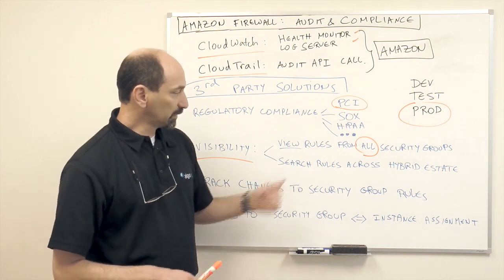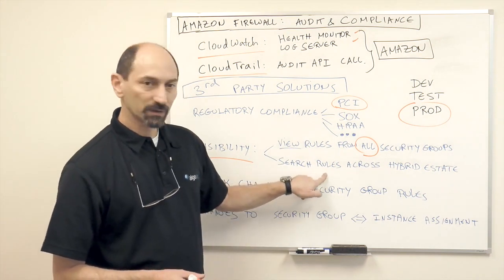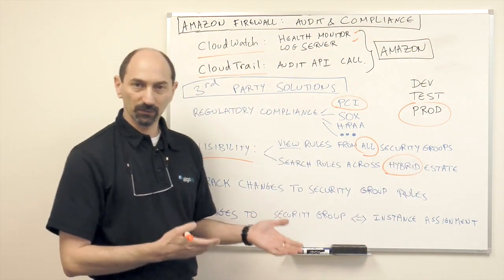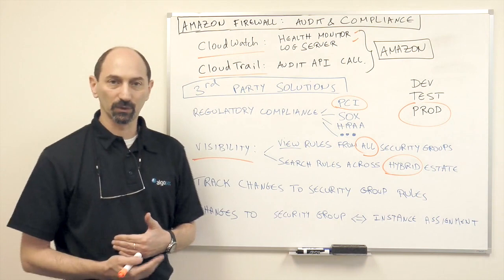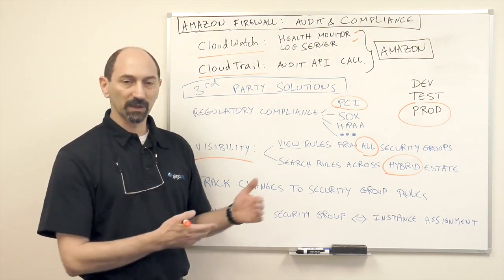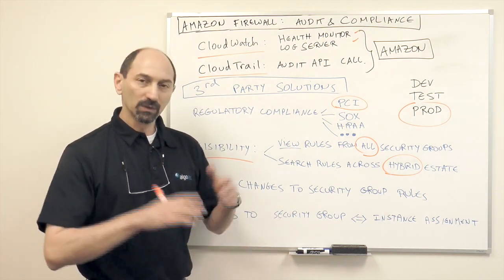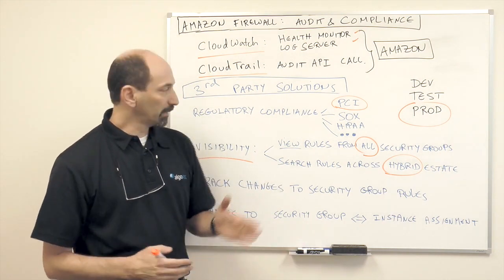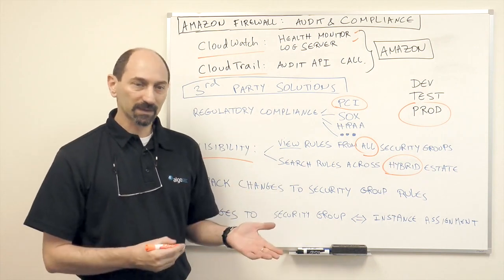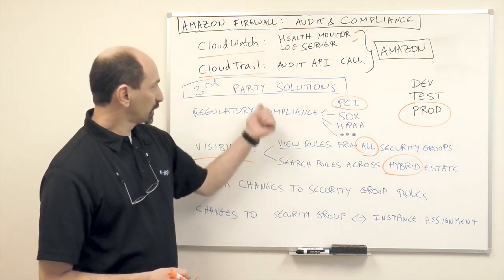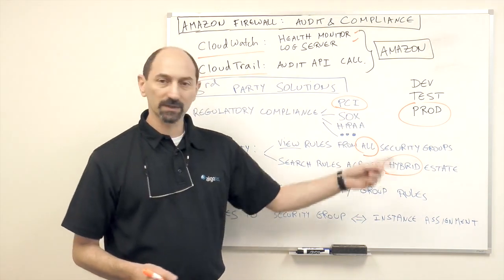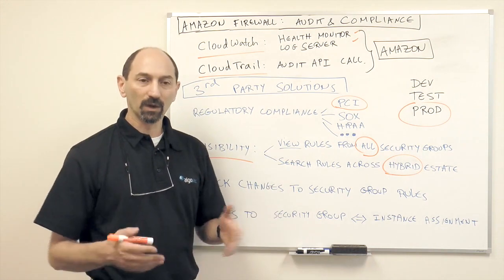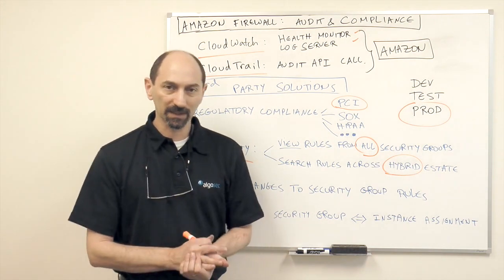Another thing that you need is the ability to search across the rules across your whole hybrid estate. Remember, you have other firewalls protecting other pieces of your environment, protecting your data centers, protecting your remote offices. You need to get a holistic view of all of these security protections to be able to meet your audit requirements. A third-party solution should be able to search across the whole estate, regardless of whether it's a traditional firewall or an AWS firewall — you want the same capabilities and the same analysis powers.